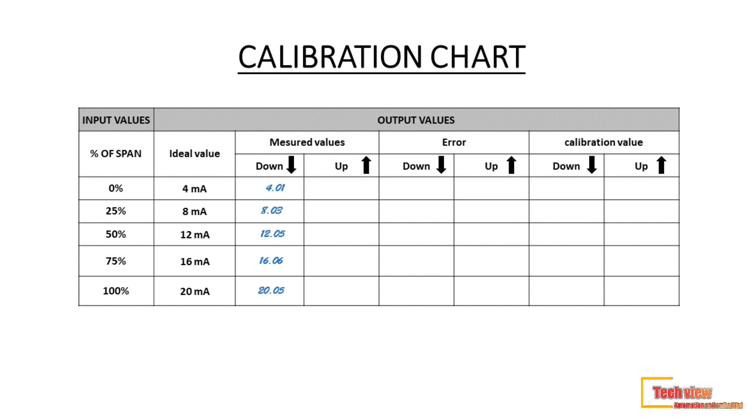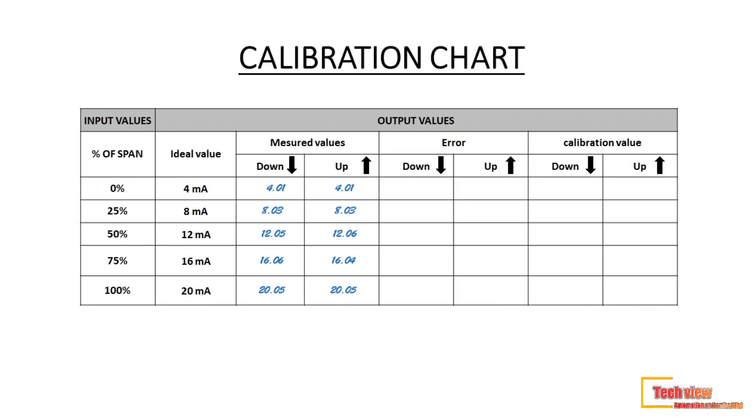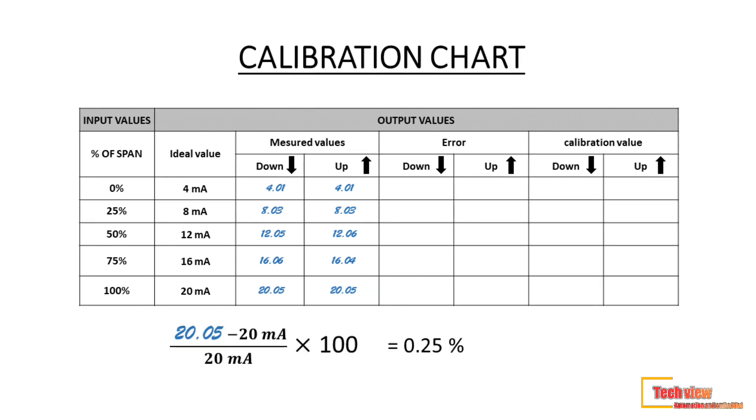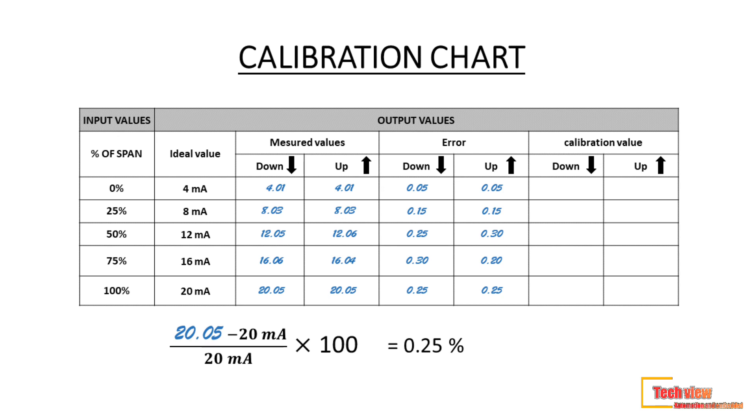Then check the hysteresis, that means whether the variation is occurring when the process value is going in downscale. The output signal corresponding to 100%, 75%, 50%, 25%, 0% in order is recorded. The deviation and error at each checkpoint is calculated and compared to the deviation maximum allowed. If the deviation is greater than the allowed tolerance, then recalibration is required. If deviation is less than the maximum allowed tolerance range, then calibration is not required.